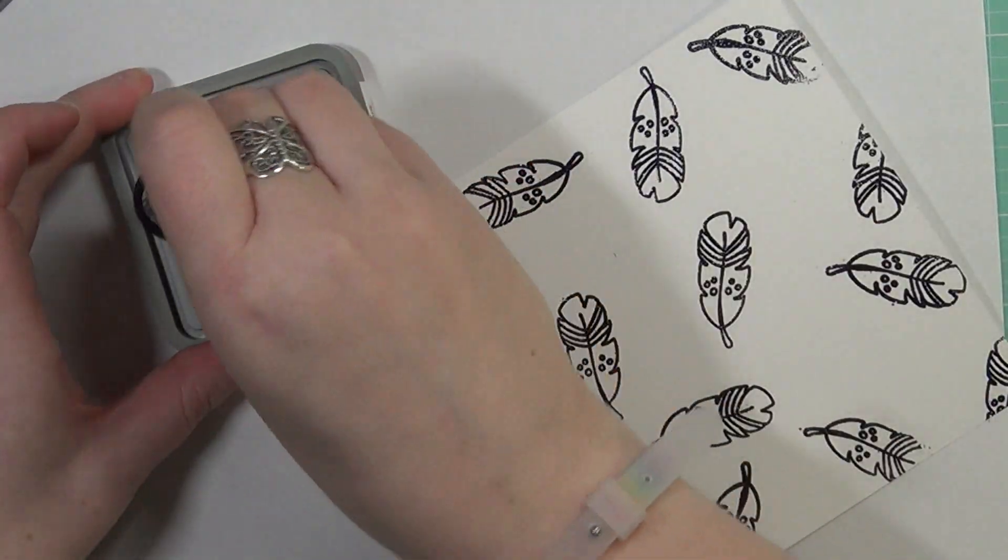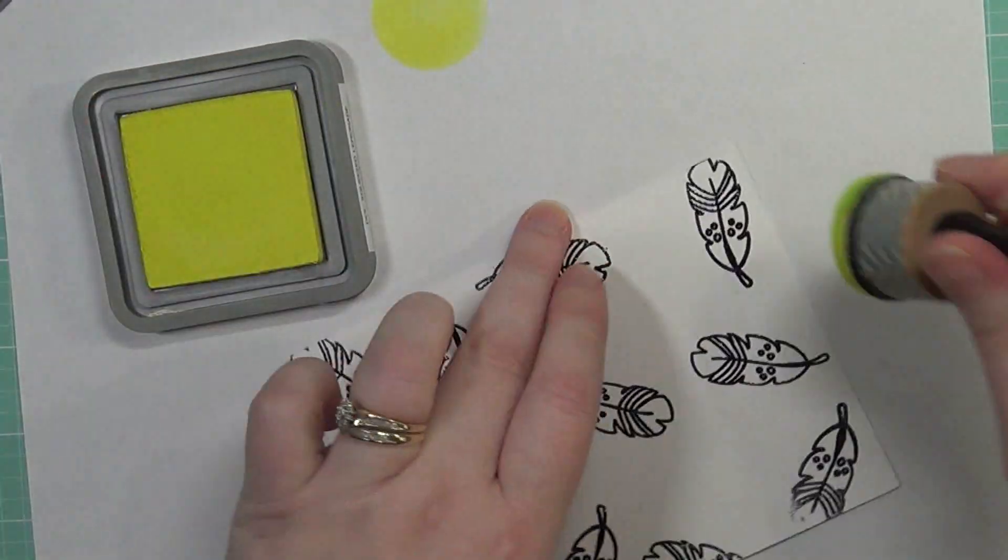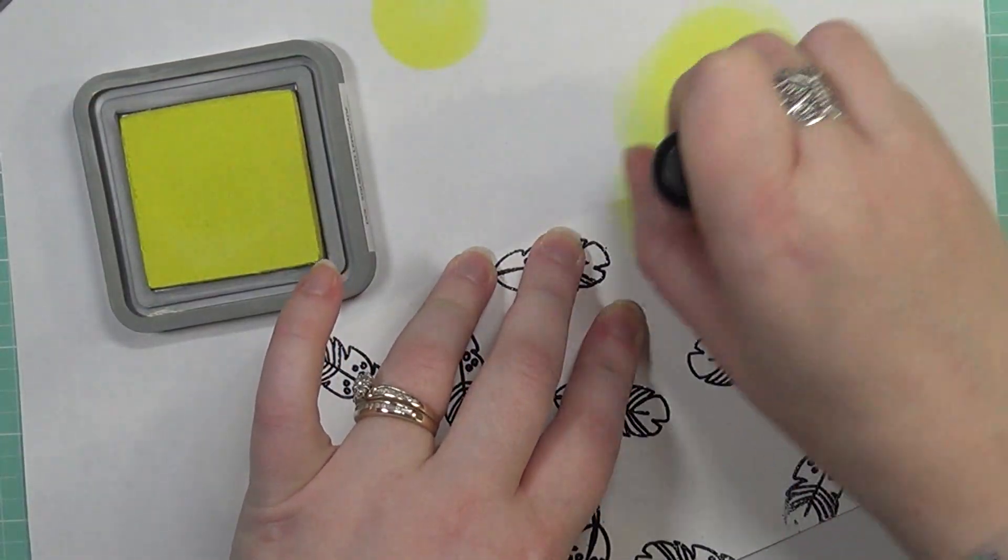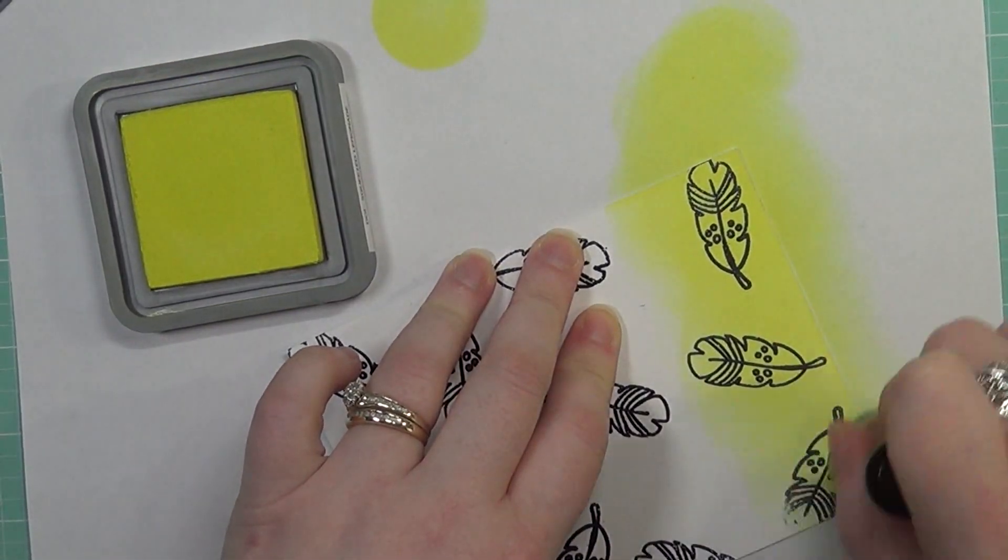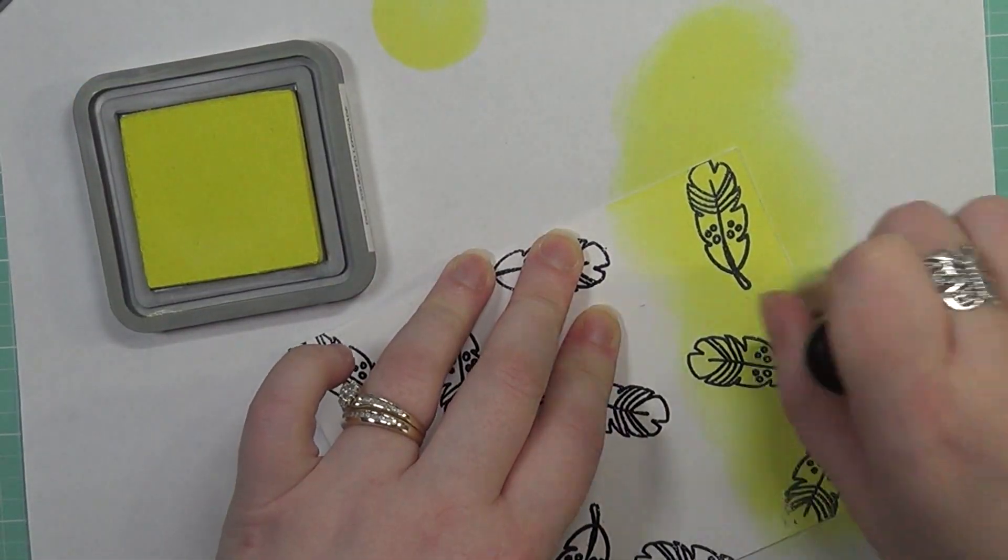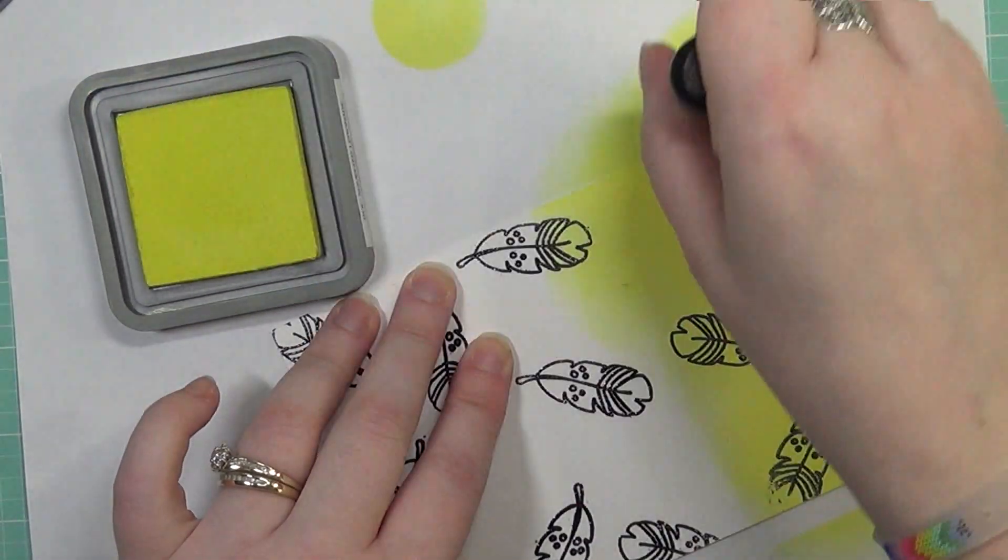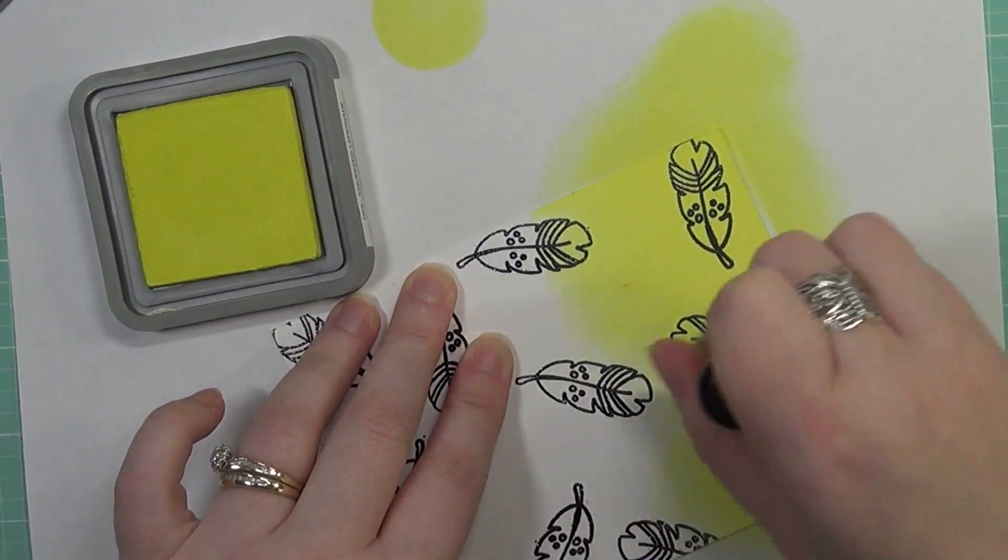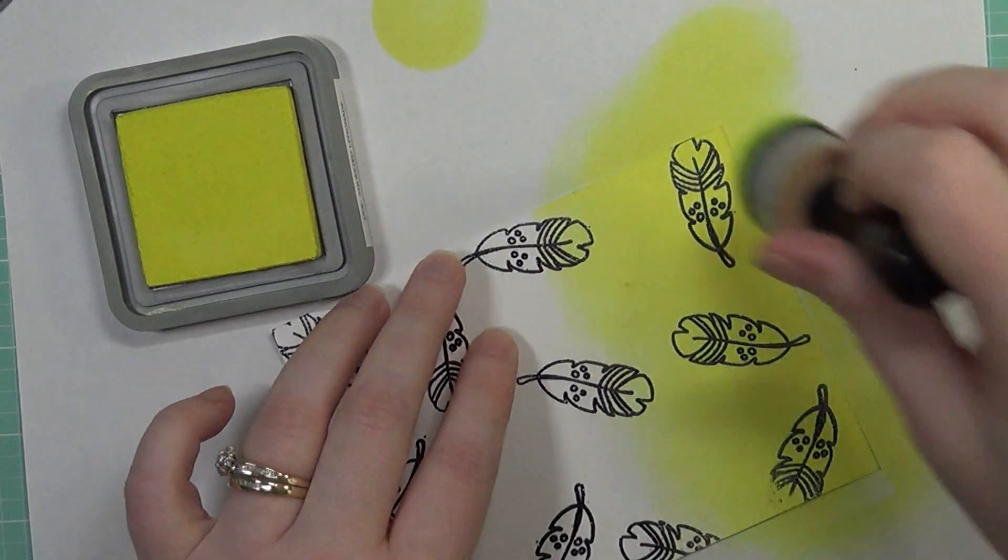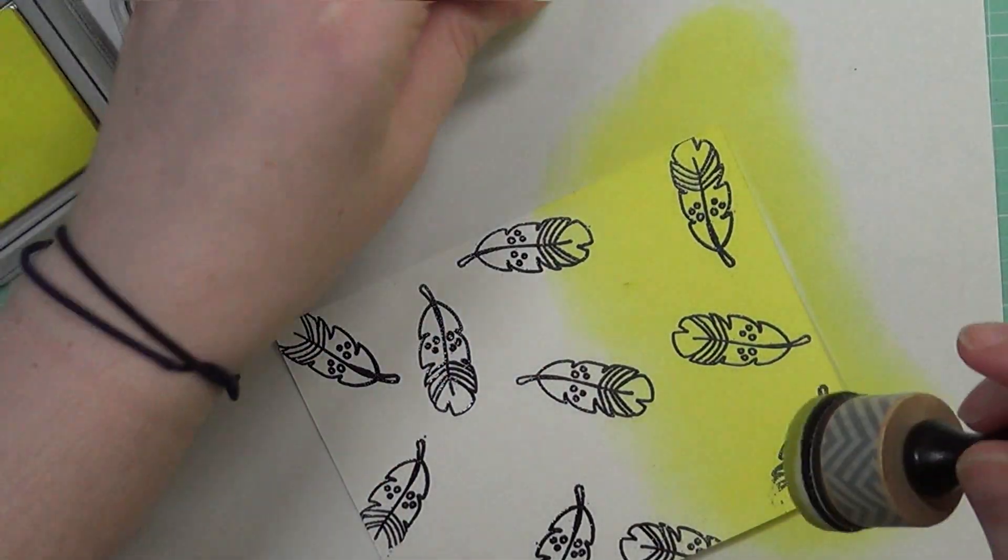Next we're going to add the color to our background, and I've chosen three colors of Distress Oxide inks. First up, we're going to use the Squeezed Lemonade color. This is a wonderful bright yellow, and I absolutely love the formulation of these Oxide inks. I've said that in many videos, but I really do love the Squeezed Lemonade color. It's absolutely fantastic, and you can do this really light or really heavy-handed, and it gives great results either way.